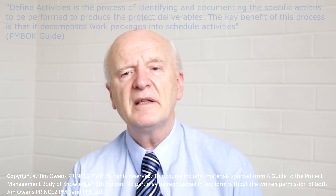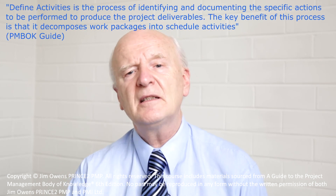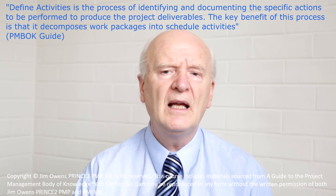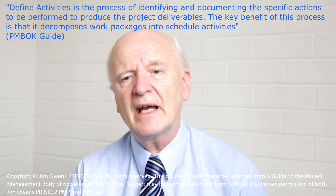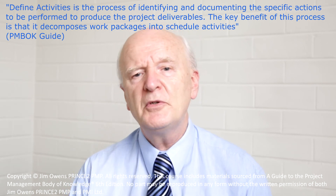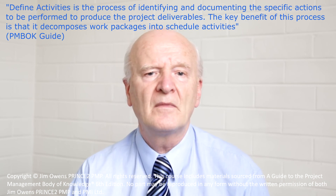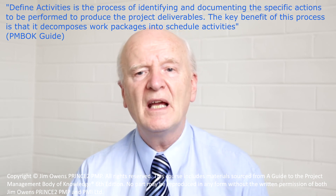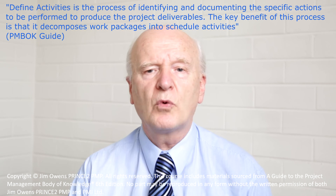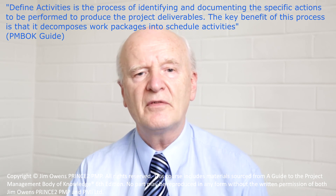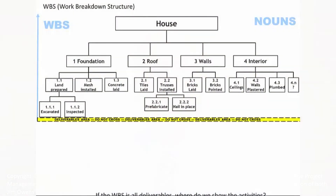The PMBOK Guide tells us that Define Activities is the process of identifying and documenting the specific actions to be performed to produce the project deliverables. The key benefit of this process is that it decomposes work packages into scheduled activities. Our next step is to create another chart below the Work Breakdown Structure — this chart is called the activity list.